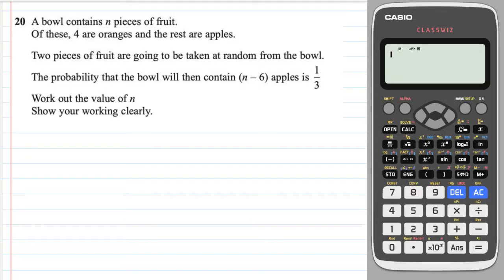Hello, this is a classic tricky grade nine probability question that they like to do. These questions come up more frequently now. A bowl has n pieces of fruit, of these four are oranges and the rest are apples.